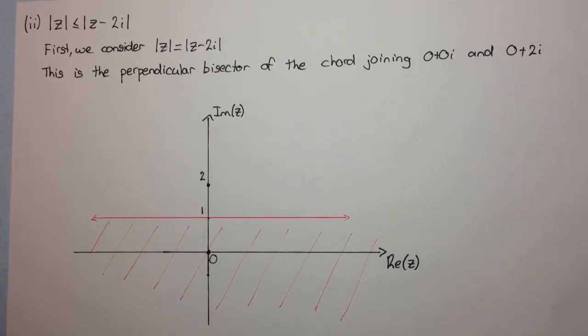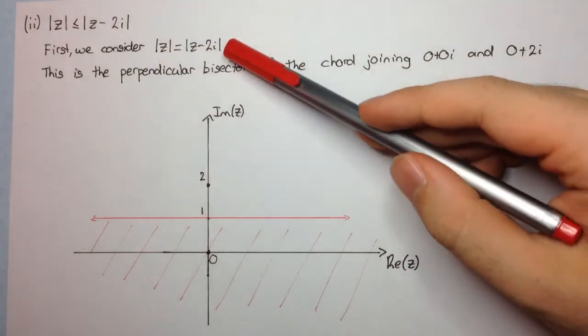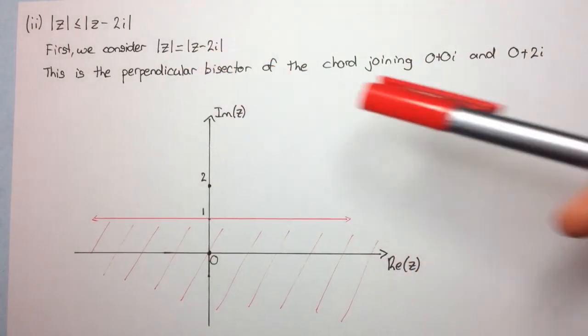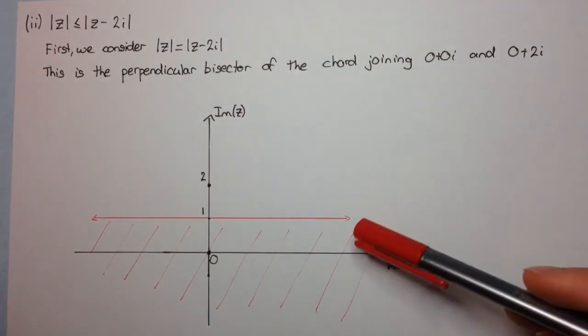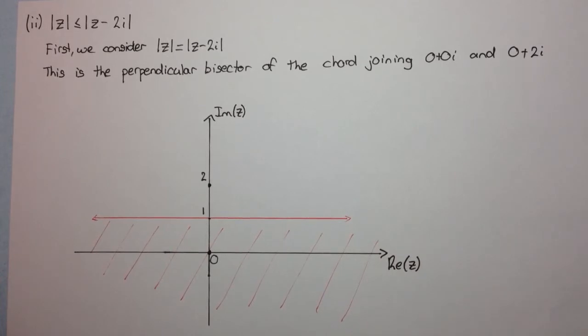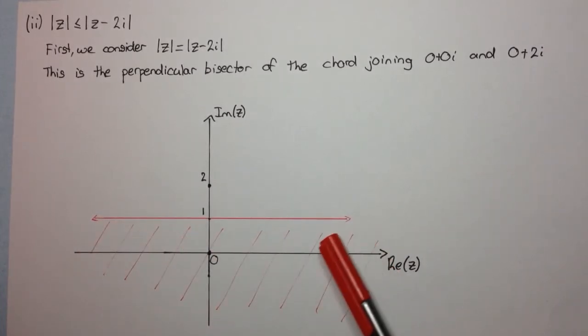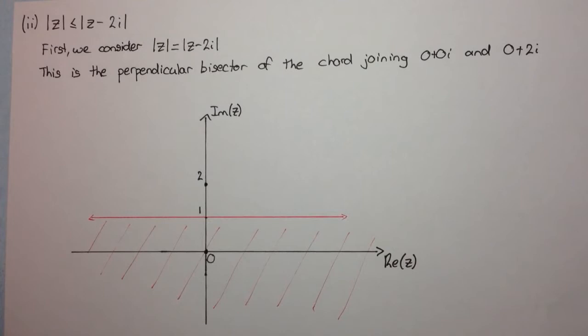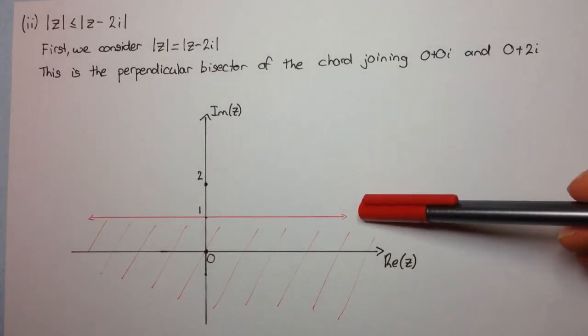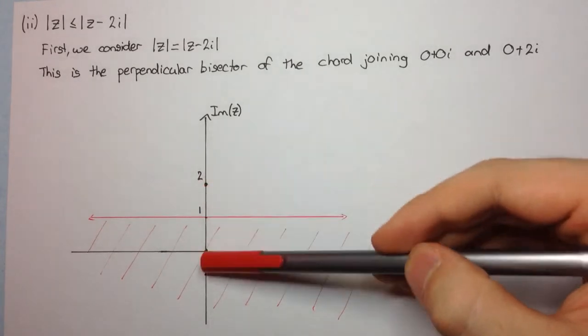Now, once again, we can derive the equation of this line by using algebraic methods, but there's no need to unless the question asks. So, this is perfectly sufficient in an exam situation to just draw this line in and say that this is the perpendicular bisector of the chord joining these two points.